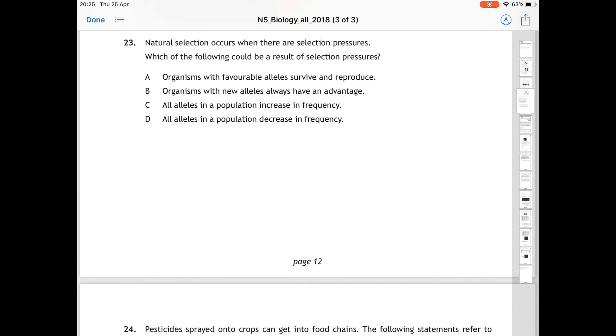Question 23 is relating to natural selection. It says it occurs when there are selection pressures. Which of the following could be a result of selection pressures? If we look at A, organisms with favourable alleles survive and reproduce. That is true. That could be a result of selection pressure. So 23 is A.